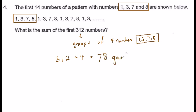So this 78 means that it's 78 groups of 1, 3, 7, 8. And if you're finding the sum, you know that in one group, what is the sum? 1 plus 3 plus 7 plus 8, that will give us 19.